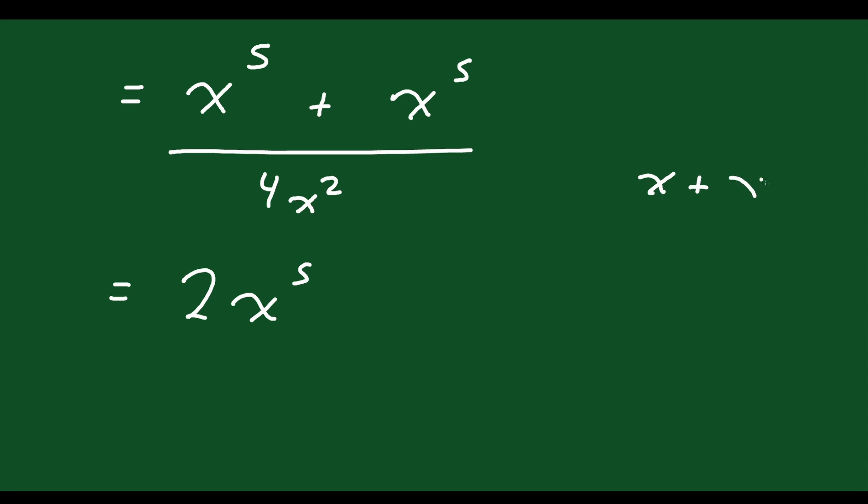It's like if you had x plus x, you would get 2x, right? Same idea. So I have 2x to the 5 over 4x squared.